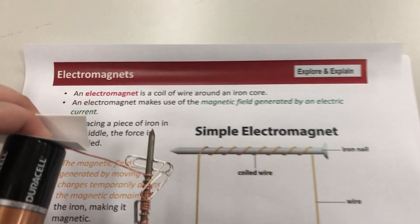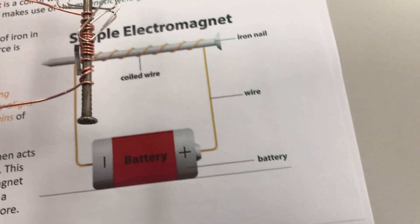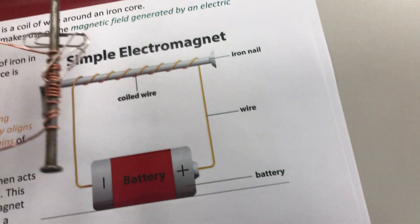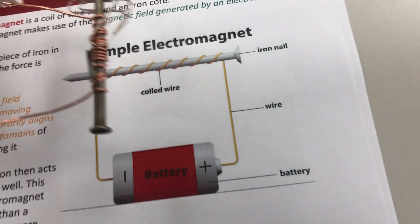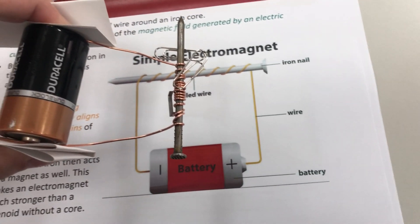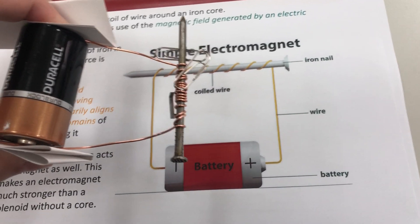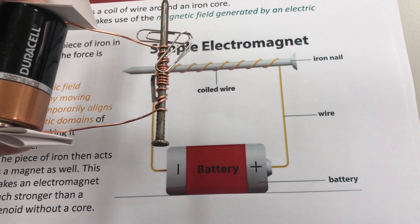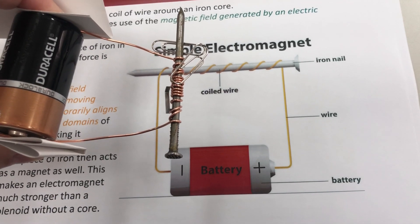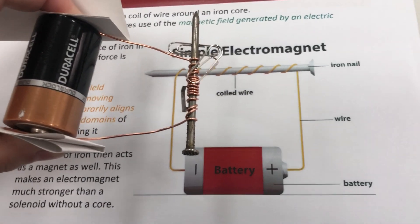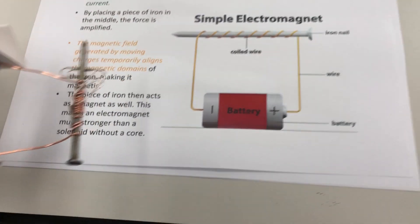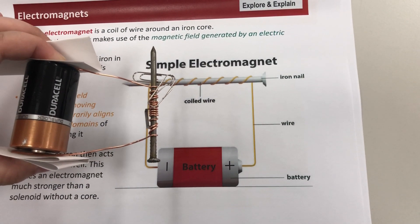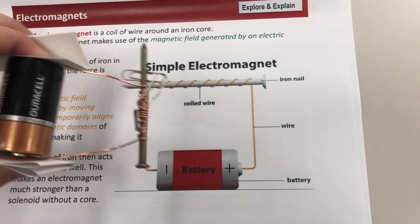I was able to pick up these materials because the nail has become a magnet for a temporary period of time. So an electromagnet is basically creating a magnet from electric current. What caused this iron nail to become a magnet? It's the electric current flowing through the wire, which makes the domains align and creates the magnet.